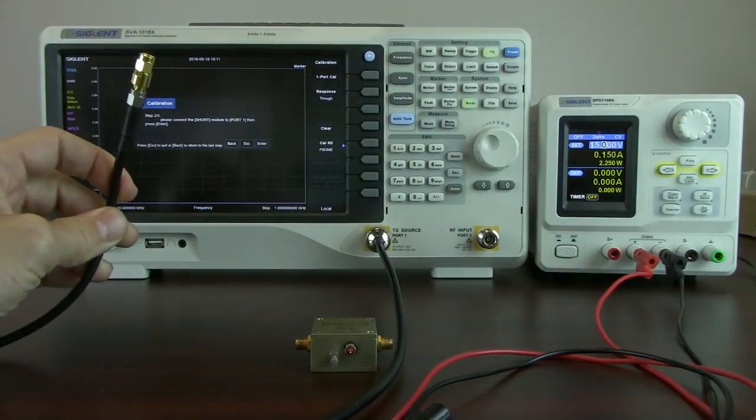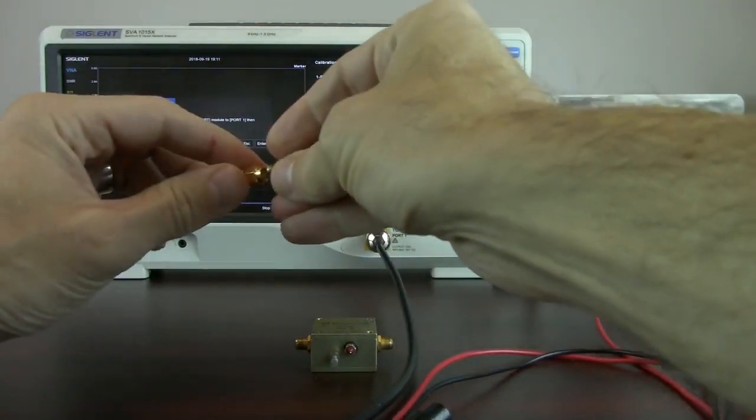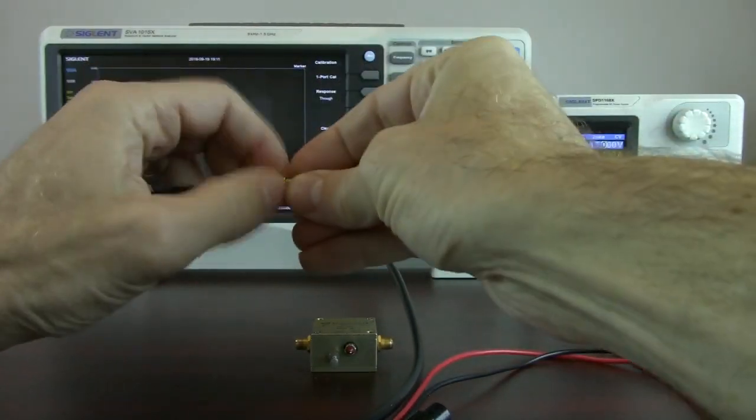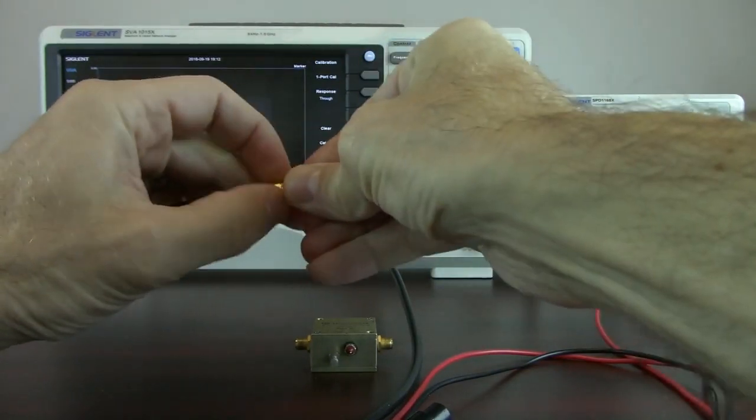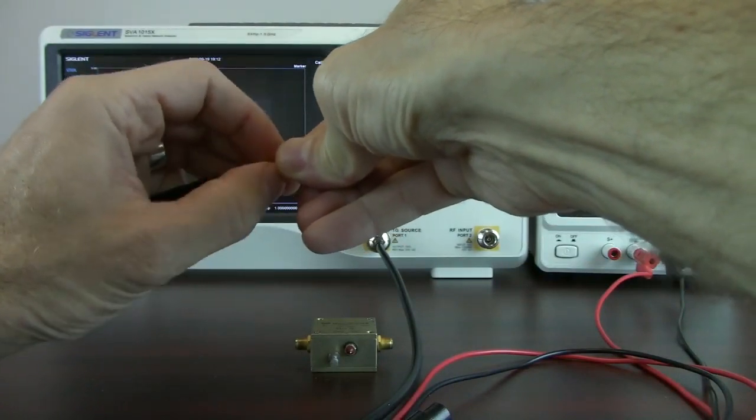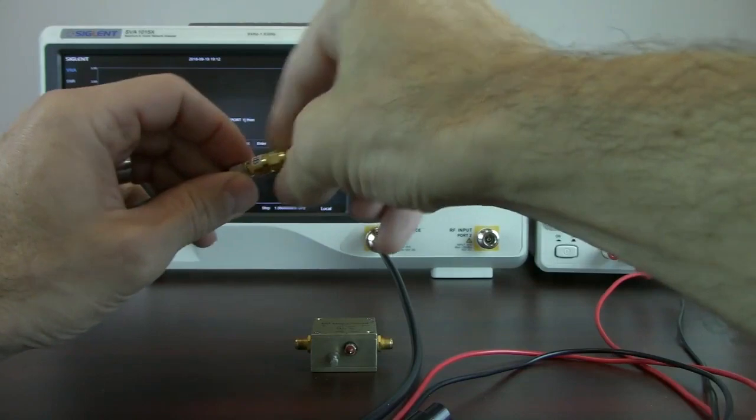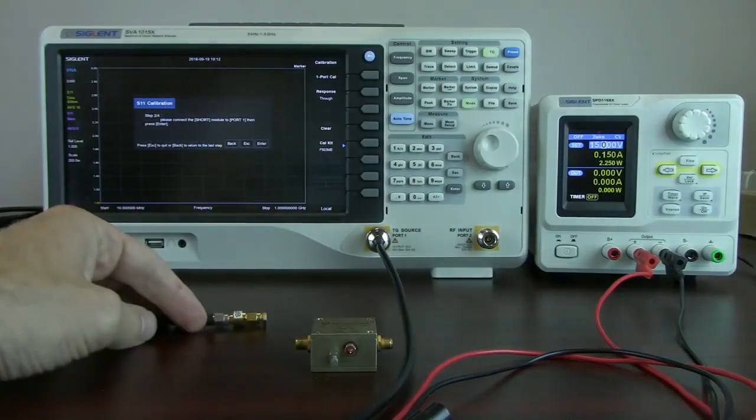Now it says to short. So I've purchased and already characterized this SMA short. Again I'm holding the short and I'm rotating the hex connection here for the adapter. This calibration process is going to remove the effects of the attenuator and the cabling, or at least minimize them.